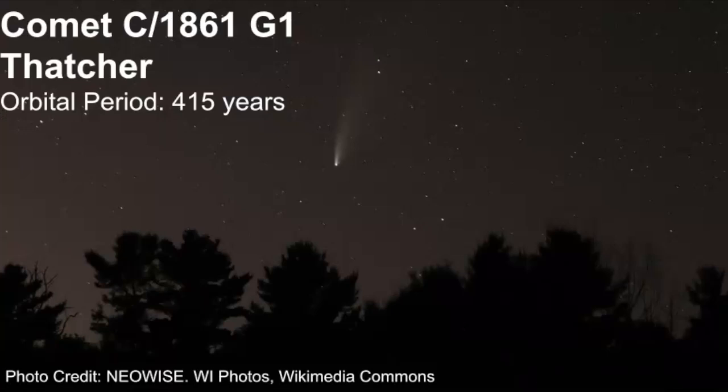Now I don't have a picture of comet C-1861G1 and that's because its orbital period is 415 years. The last time we saw it was in 1861 and it's expected to make a return to Earth around 2283.